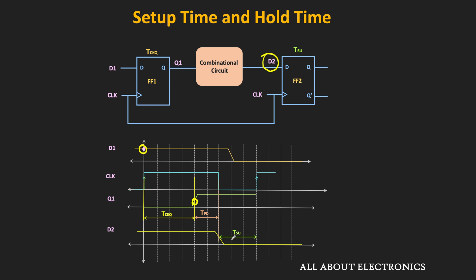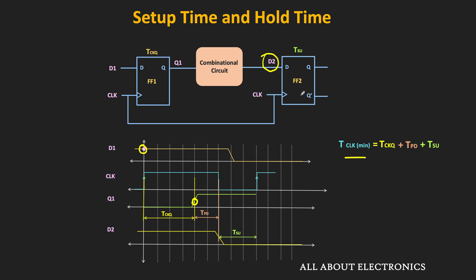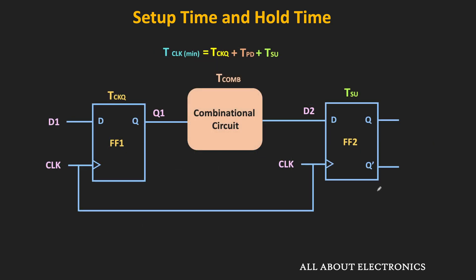This new input should satisfy the setup time and hold time conditions of the flip-flop, meaning it should remain stable for the setup time before the next clock edge of the second flip-flop. Here we are only considering setup time because we are calculating the minimum required clock duration — the time between two clock edges. The hold time comes into the picture after the clock edge and won't affect the minimum clock duration calculation. So the new clock edge of the second flip-flop cannot arrive before the sum of TCKQ, TCOM, and TSU, otherwise the second flip-flop will not latch D2 properly. This is the timing constraint to avoid setup time violation.